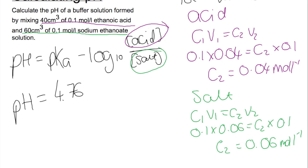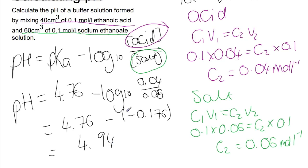We're then going to put these into the equation. So we'll have 4.76 minus log to the base 10 and we'll have 0.04 divided by 0.06. So this gives us 4.76 minus negative 0.176. So overall we have an answer of 4.94. This would be the pH at which the buffer would maintain even if you added a little bit of acid or a little bit of base.